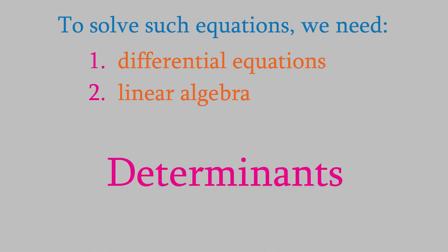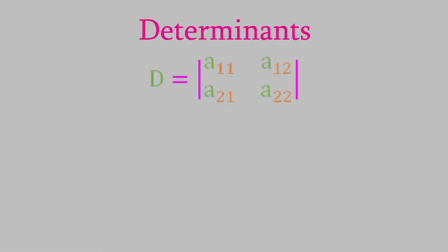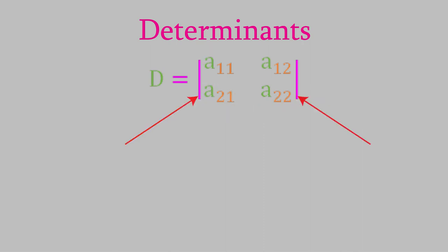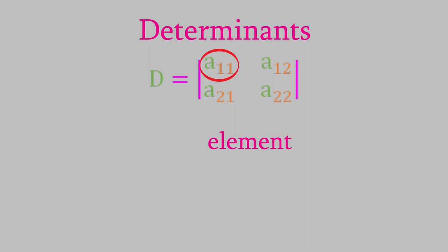A determinant is a mathematical object consisting of a group of numbers or functions arranged in a grid. The grid is always square, so the smallest determinant will have two rows and two columns, where the rows are horizontal and the columns are vertical. We always show that the grid we're drawing is a determinant and not a matrix by placing a vertical line on each side of the determinant. The items in the determinant are called elements.